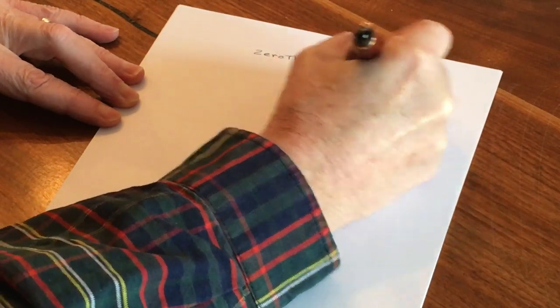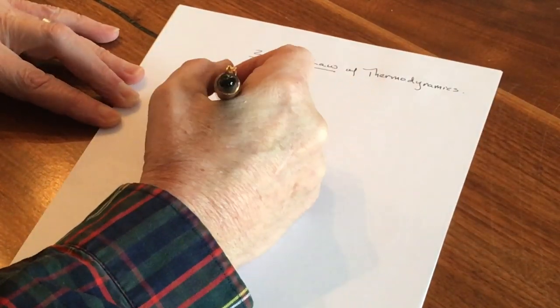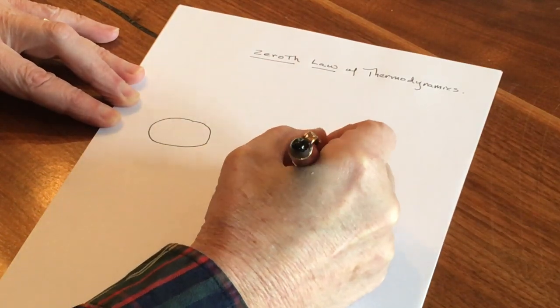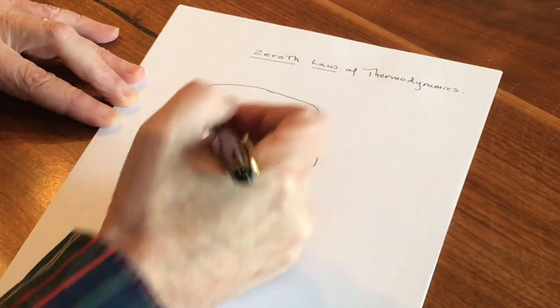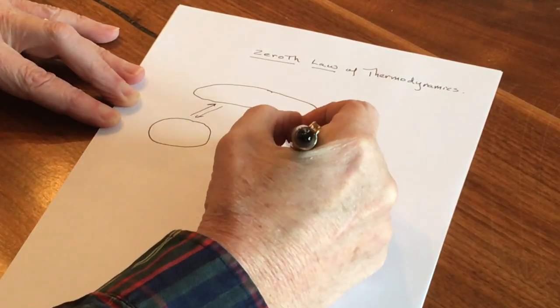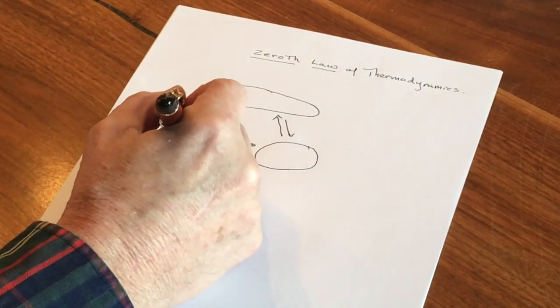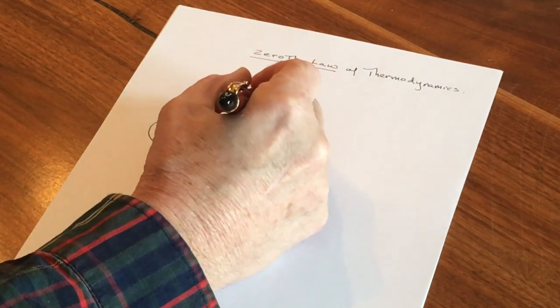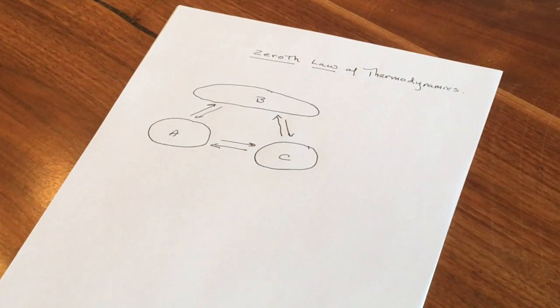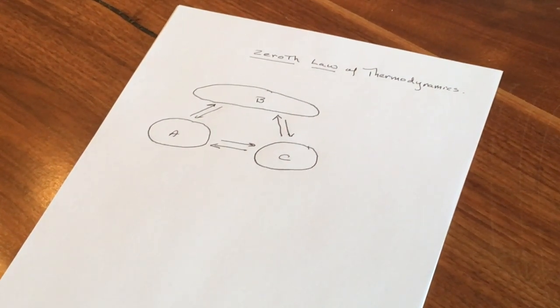This takes us to the zero law of thermodynamics. If we have a system that is in equilibrium thermodynamically with another system, and a third system that is in equilibrium thermodynamically with that second system, the first and the third systems are in equilibrium with each other. We can represent that visually by saying that system A is in equilibrium with system B. System C is in equilibrium with system B. So therefore, system A is in equilibrium with system C.